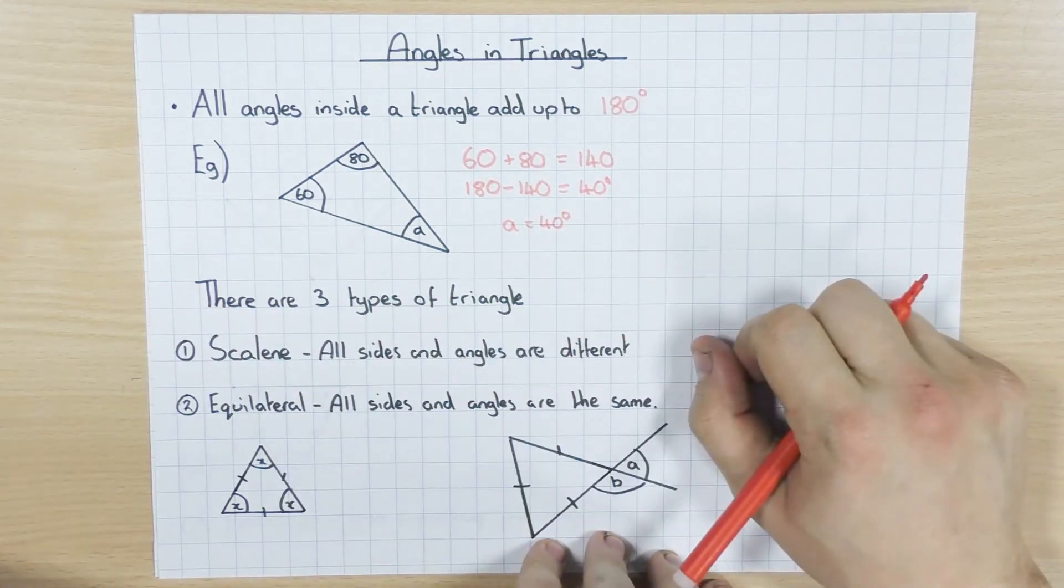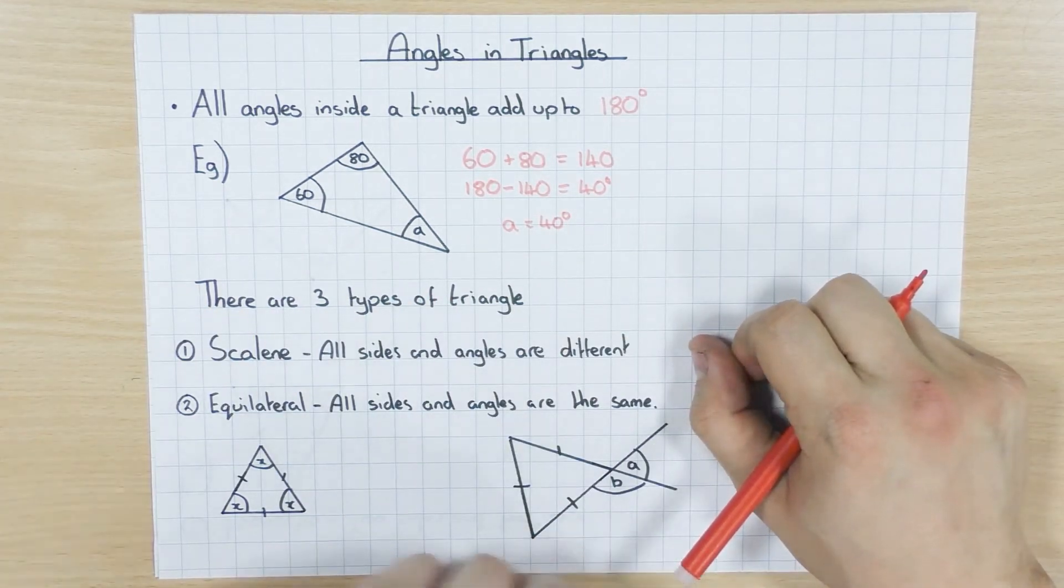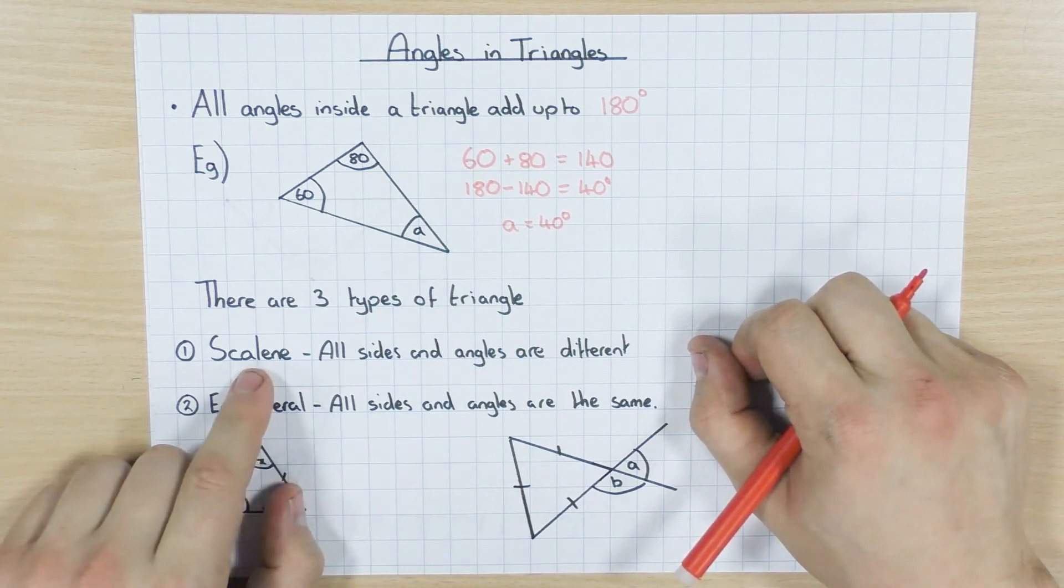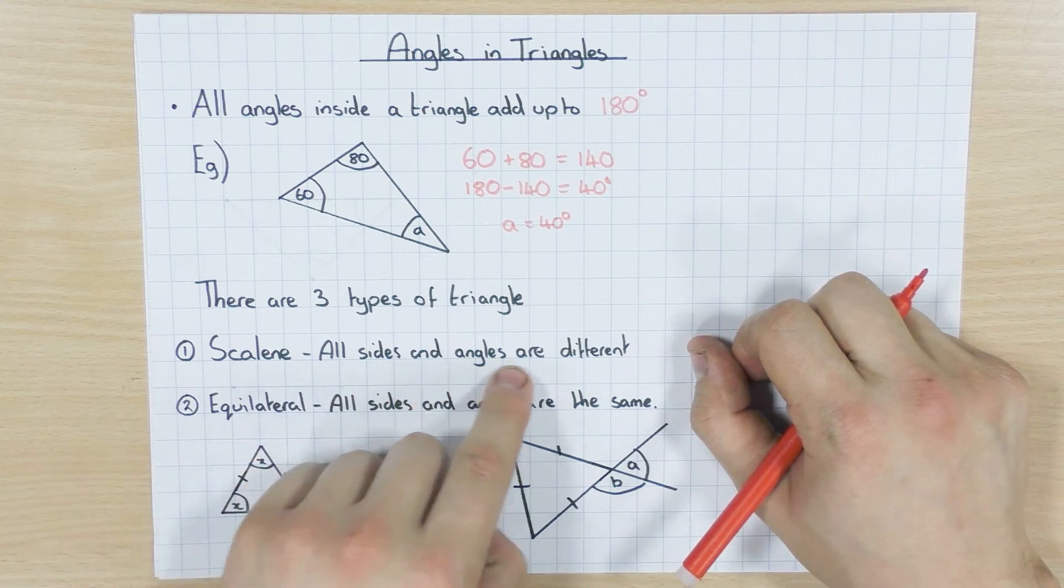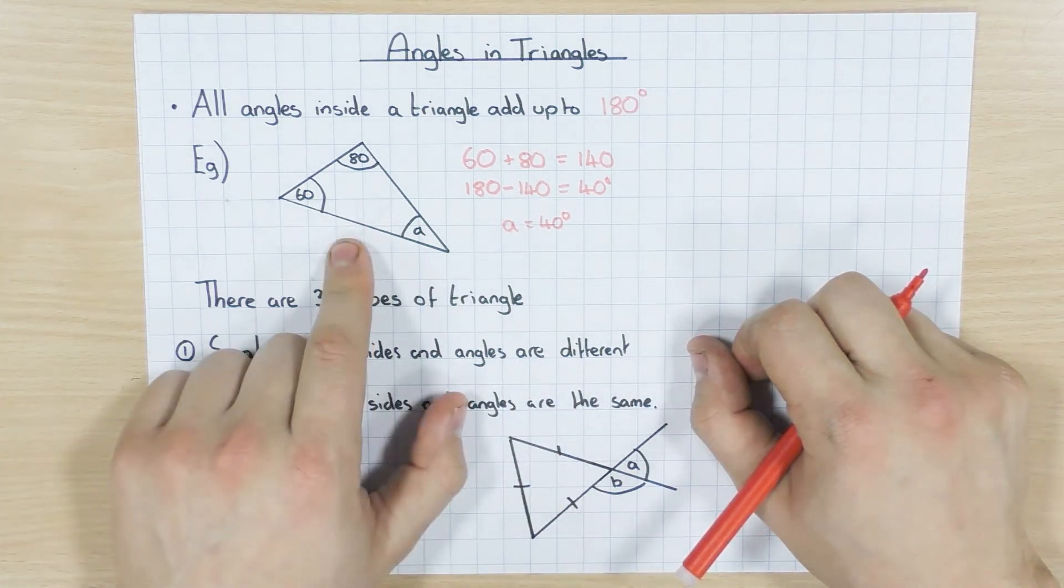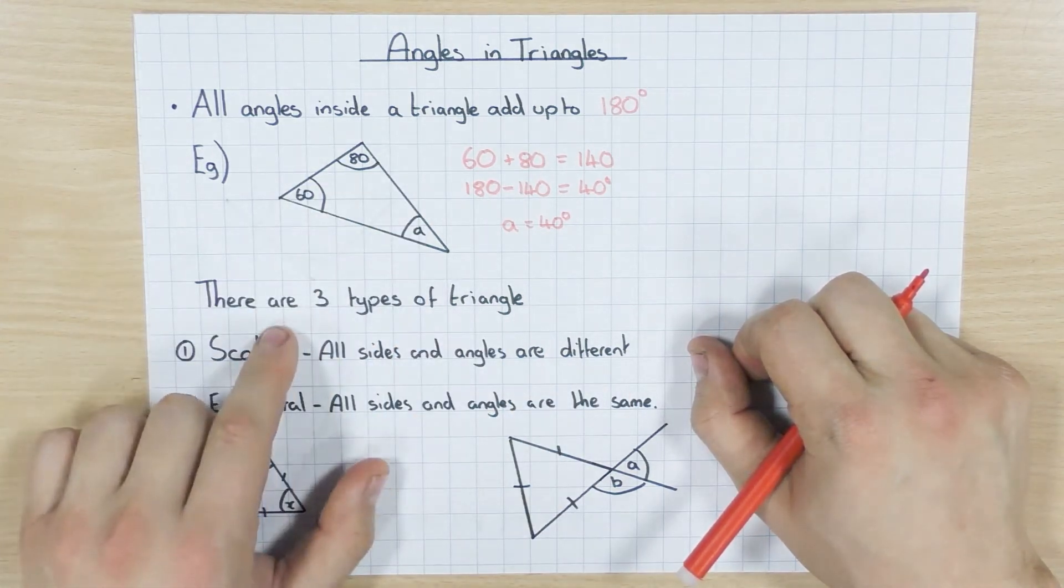Now there are three types of triangle, and I've got special names which you do need to remember. The first of which, well not so special really, is a scalene triangle, where all the sides and all the angles are different. So this would be an example of a scalene triangle, because it's all completely different.